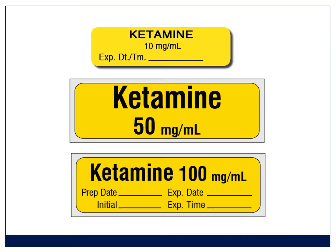Remember that ketamine comes in different strengths: 10 milligrams per mil, 50 milligrams per mil, or 100 milligrams per mil. We have so many drug errors — always check which concentration you've been given.